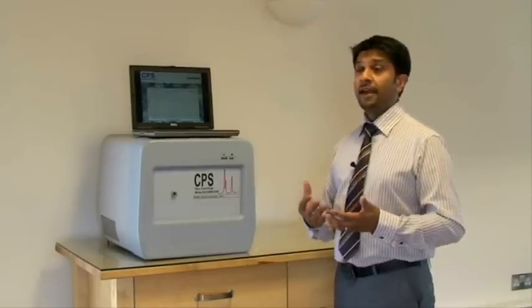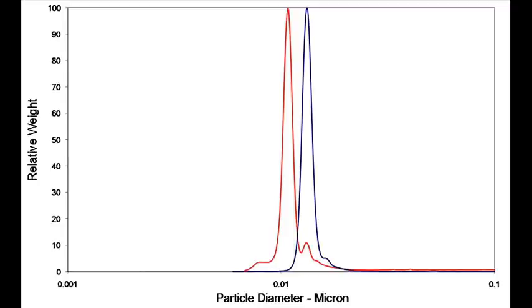The other very interesting application is the ability to separate and characterize particles which have been coated with another material type. A great example of this is where you're looking at gold and silver nanoparticles, and you're looking at the coating characteristic of those materials. In this example, you can clearly see we've got a peak for the core material, and as we coat that material...